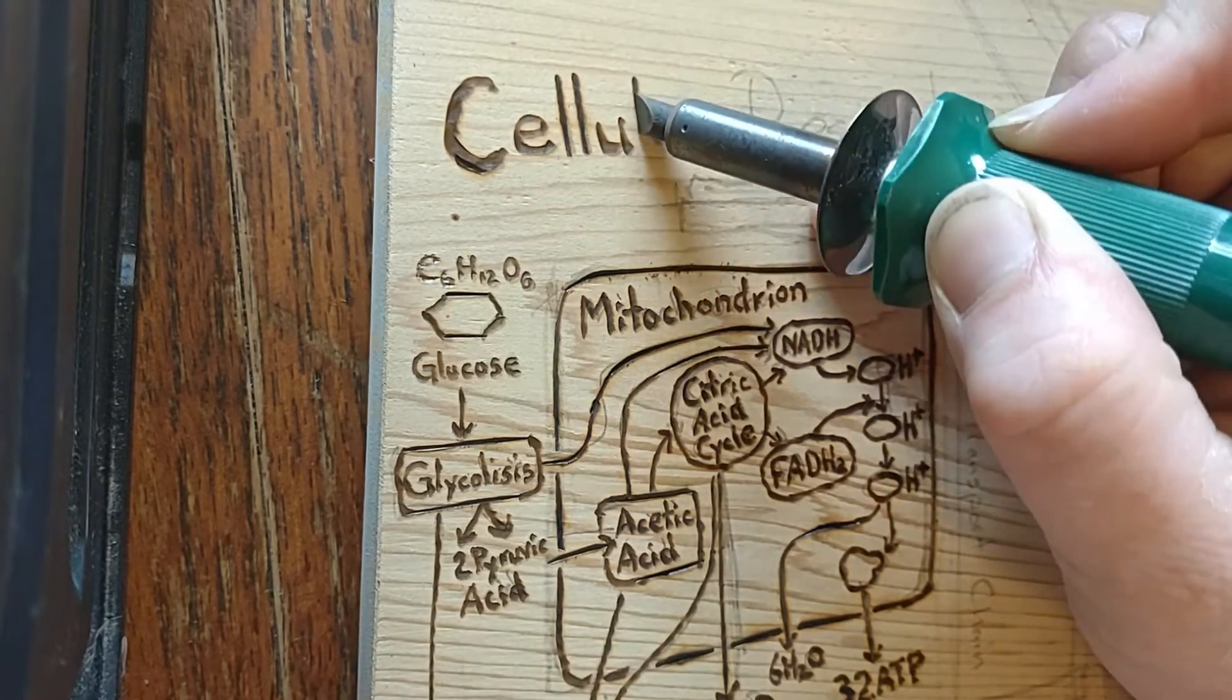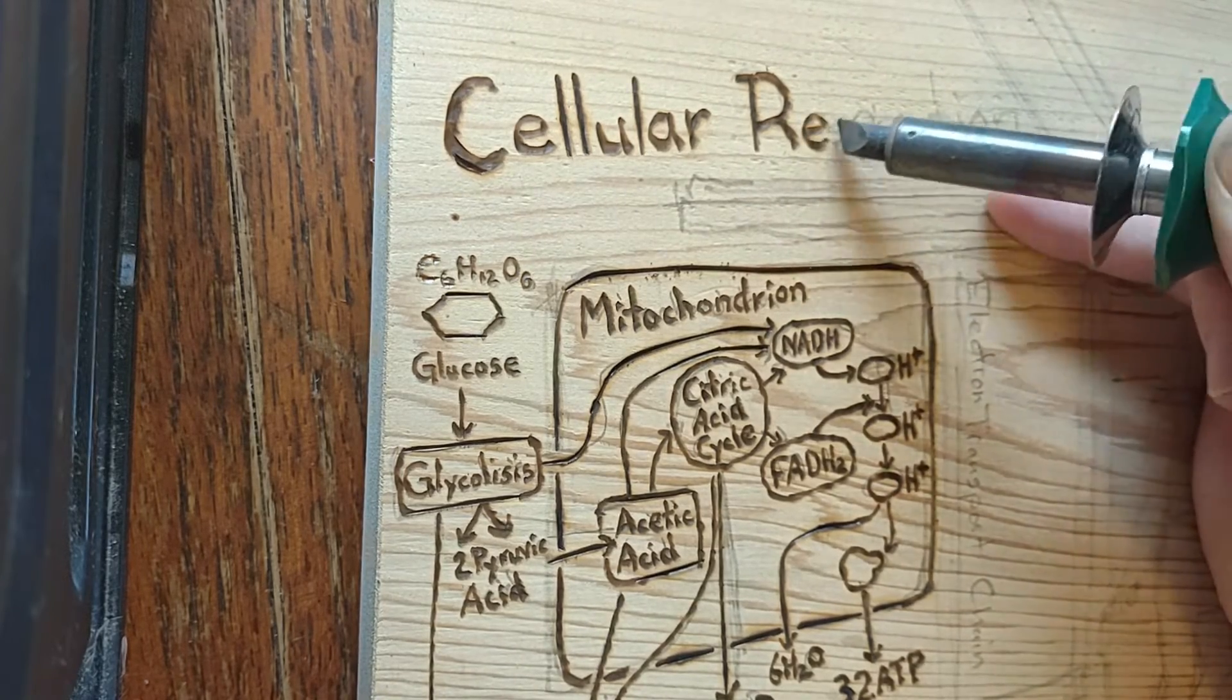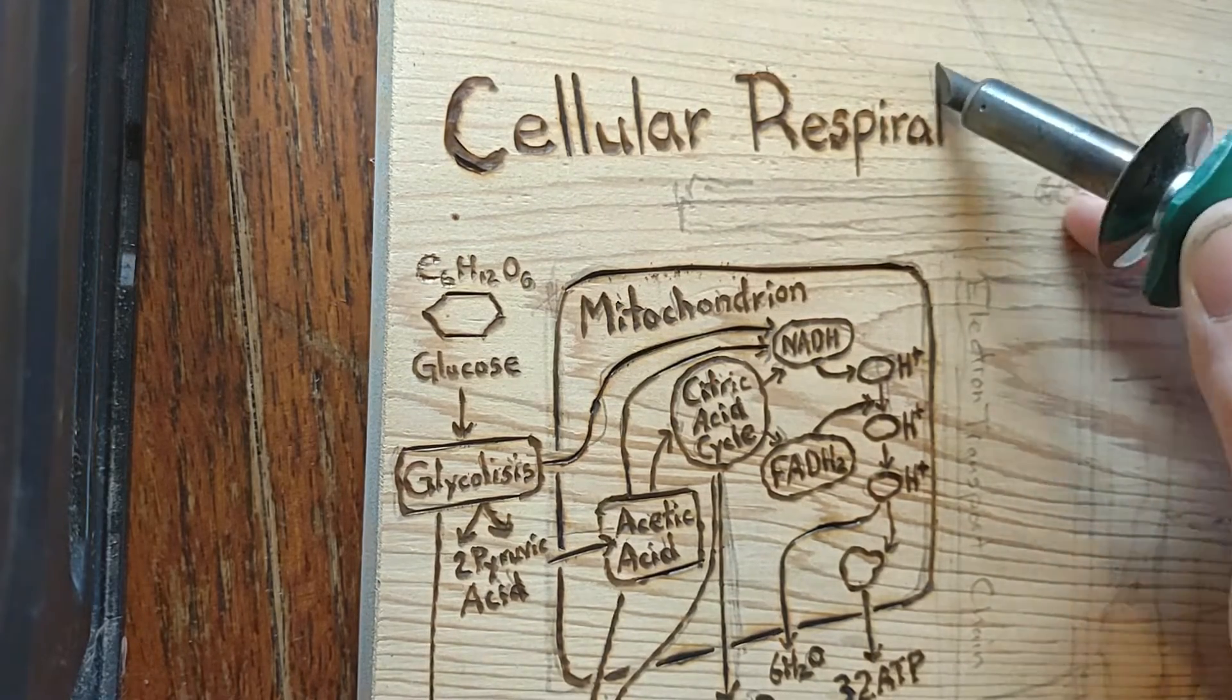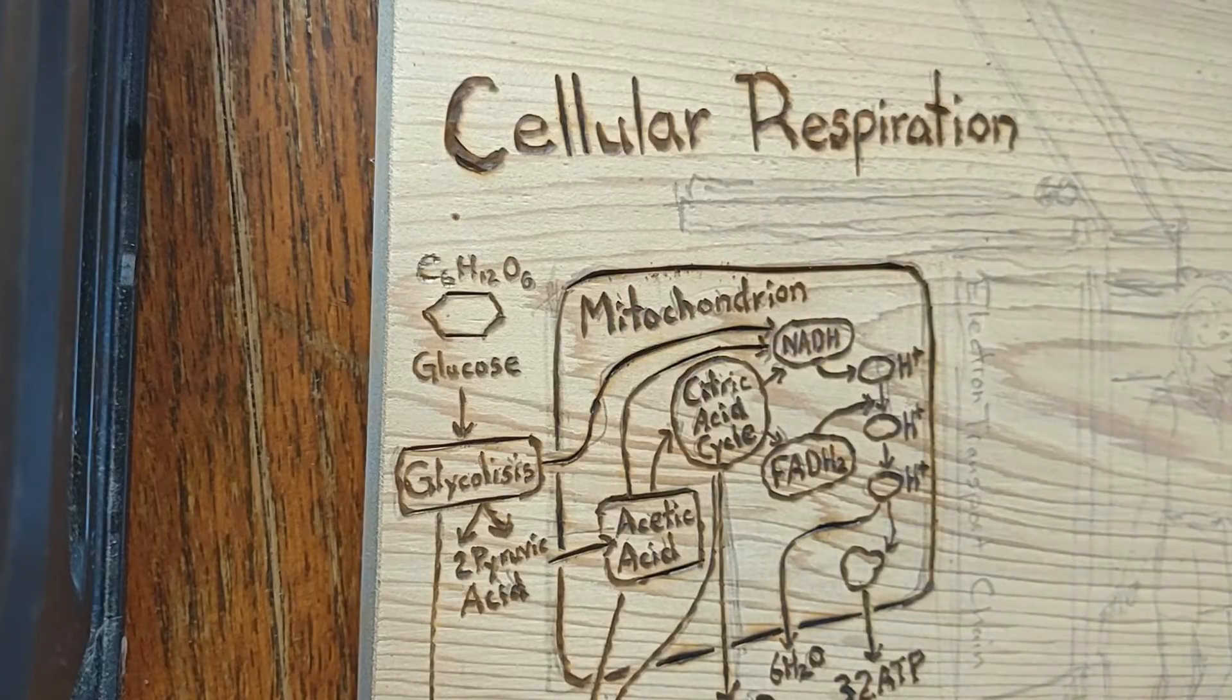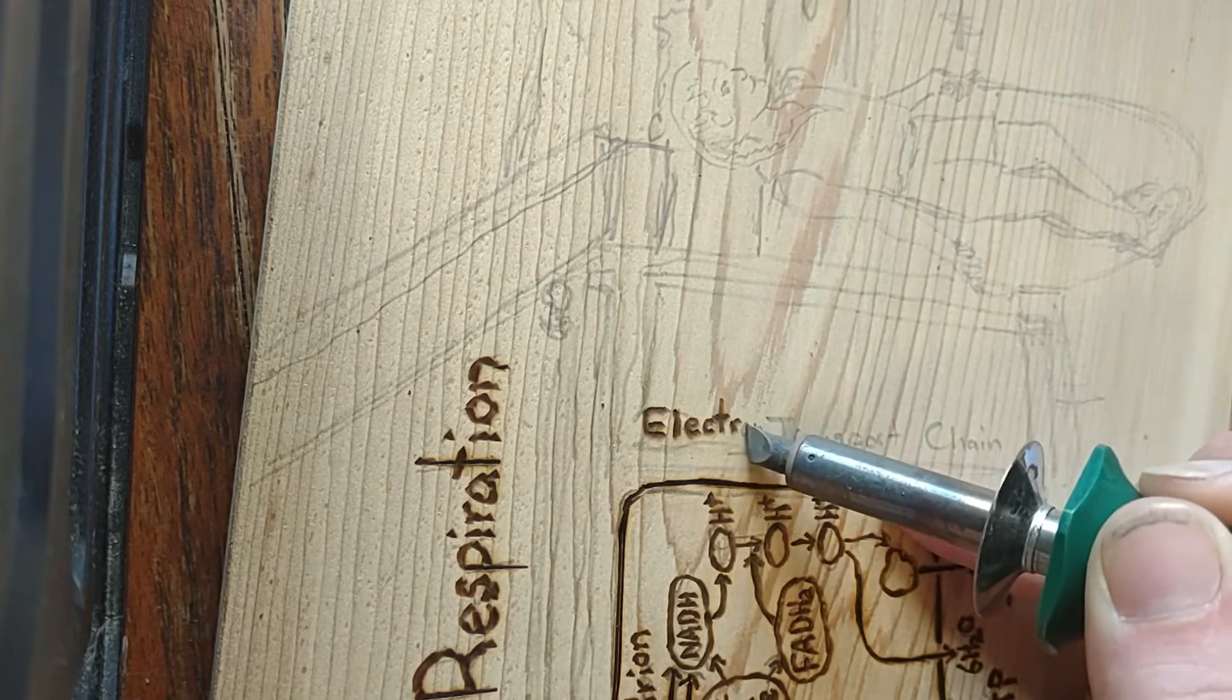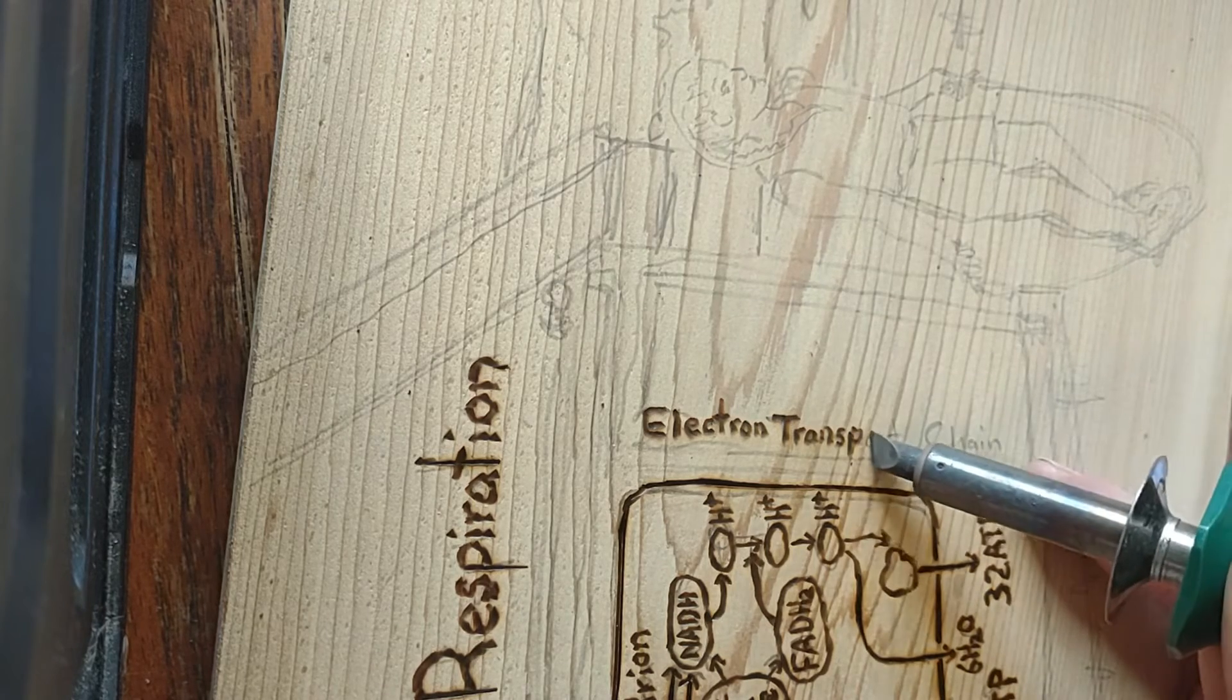In eukaryotes, oxidative phosphorylation occurs in the mitochondrial cristae. It comprises the electron transport chain that establishes a proton gradient across the boundary of the inner membrane by oxidizing the NADH produced from the Krebs cycle. ATP is synthesized by the ATP synthase enzyme when the chemiosmotic gradient is used to drive the phosphorylation of ADP. The electrons are finally transferred to exogenous oxygen, and with the addition of two protons, water is formed.